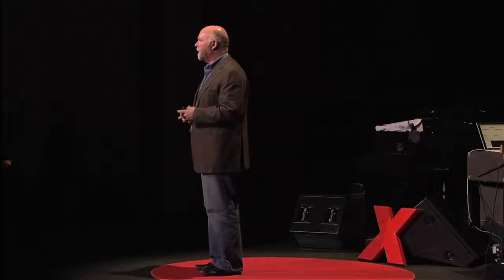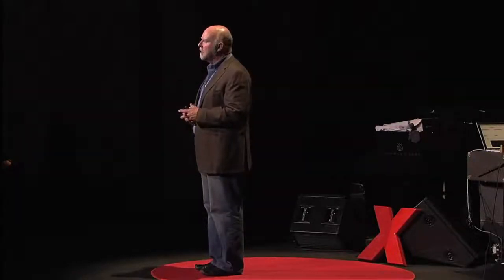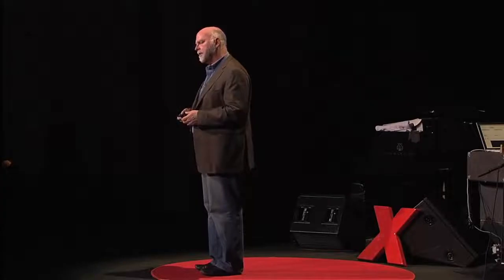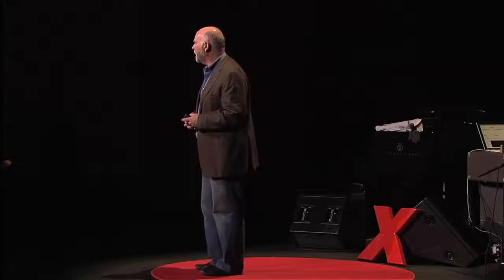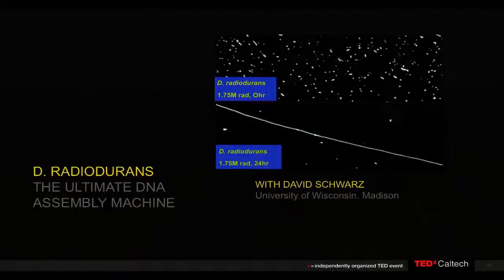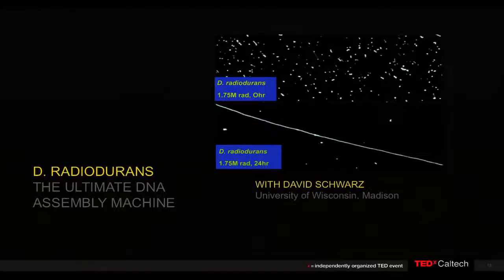The problem was when we got over a hundred thousand letters in size, E. coli wasn't too happy taking these really large pieces of DNA. So we looked around for different systems. We'd been looking at self-correction and self-assembly of DNA. This is an organism, Deinococcus radiodurans, that can take three million rads of radiation and not be killed. Its chromosome gets blown apart, as you can see in the top panel, but after 12 to 24 hours it stitches its genome back together exactly as it was before and starts replicating again.